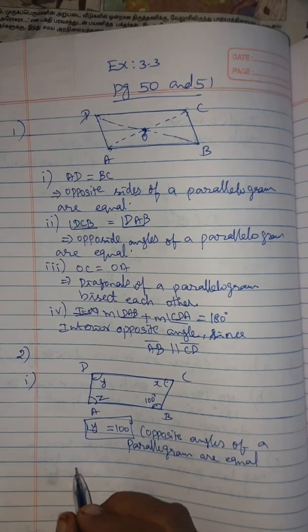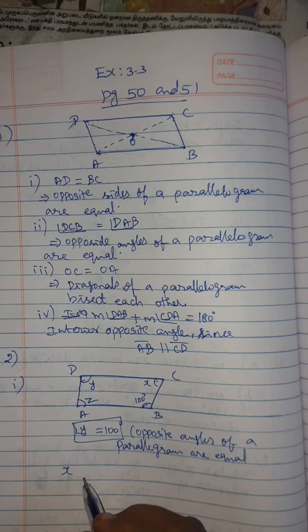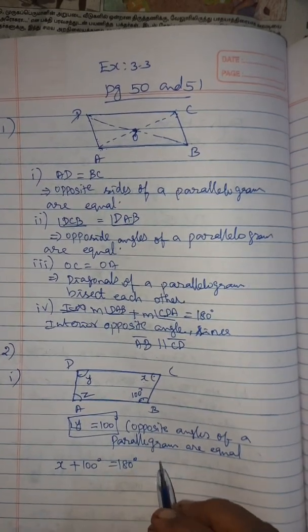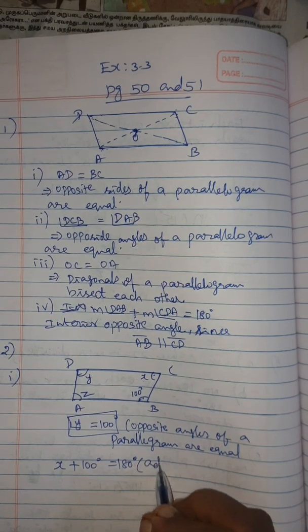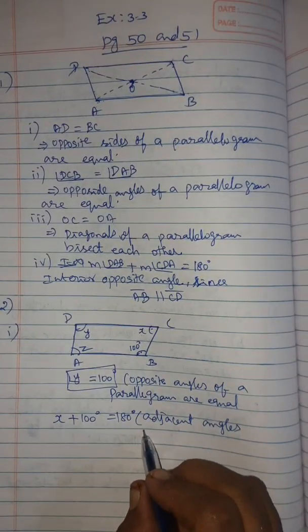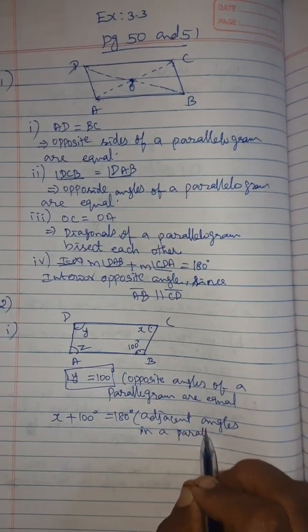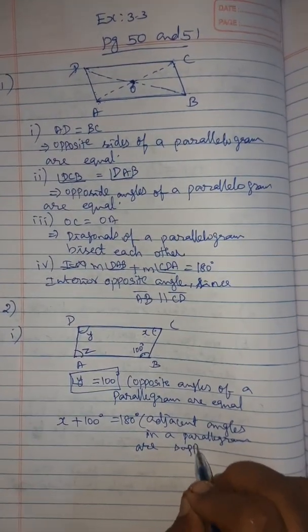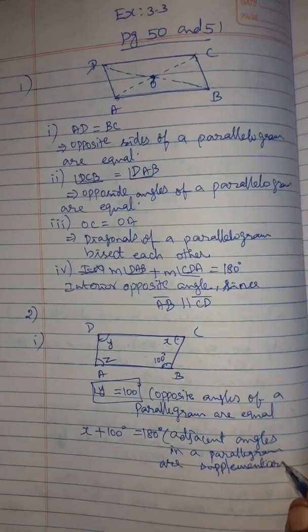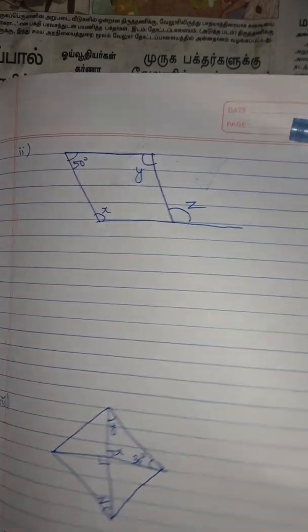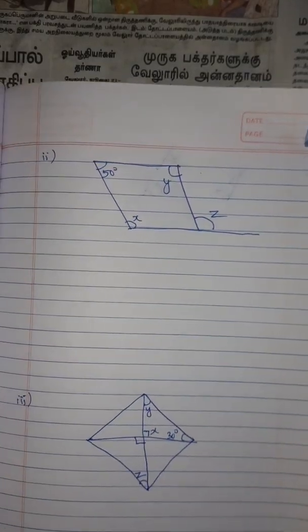Now we find X. Adjacent angles of a parallelogram add up to 180 degrees, so X plus 100 degrees equals 180 degrees. The reason: adjacent angles of a parallelogram are supplementary.